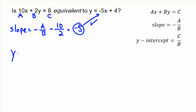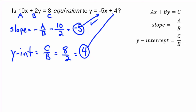Now let's check the y-intercept. The y-intercept is c over b — we take 8 divided by 2, which gives 4. That's going to be exactly the same as the other equation, so yes, they are equivalent.